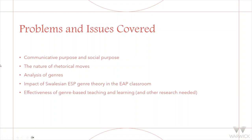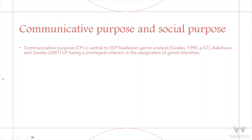So there are a few categories I'm going to look at. I don't know how brilliantly insightful this is, but I just think about these things, and these things cause me pain. Communicative purpose — I'm sure we know in this room — is essential to ESP, Swales, genre analysis, and even in the Askerhaven-Swales paper a bit later, communicative purpose is still a privileged criterion in the assignation of genre identities.